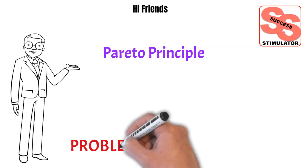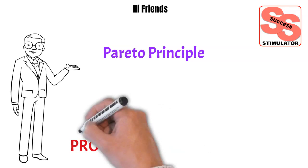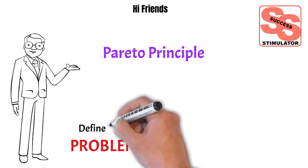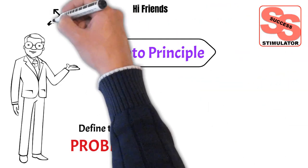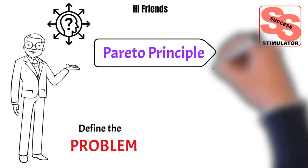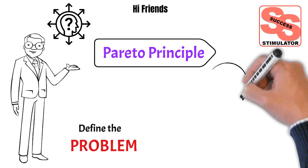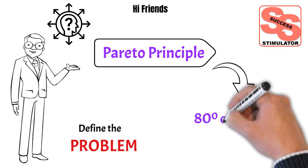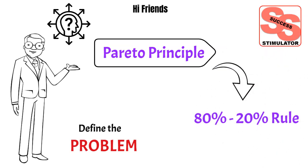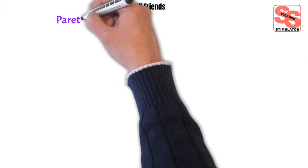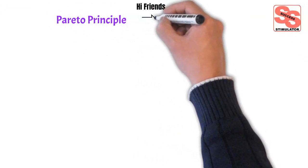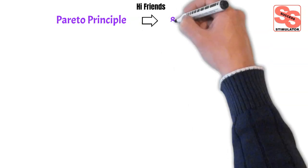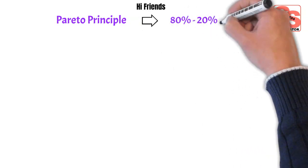Experts are saying 95% of problems will get solved when the problem is clearly defined. Pareto Principle helps us to identify the problem in any situation. We all know that Pareto Principles would also be known as the 80-20 rule. Let's see some high-level examples of Pareto Principles before we get into the details. This will help us to understand why we are calling it the 80-20 rule.